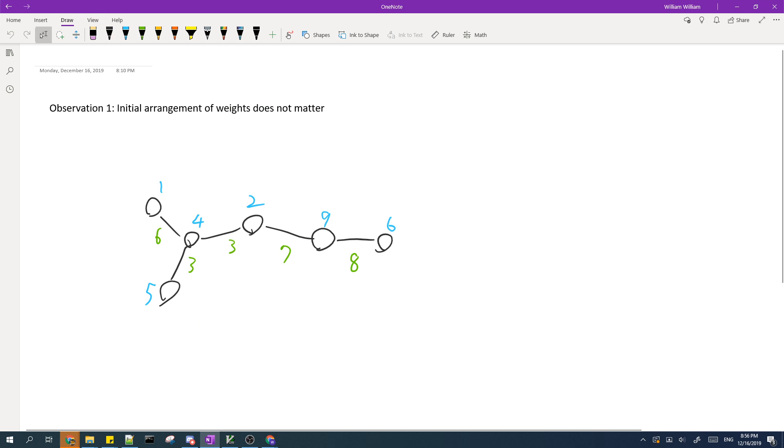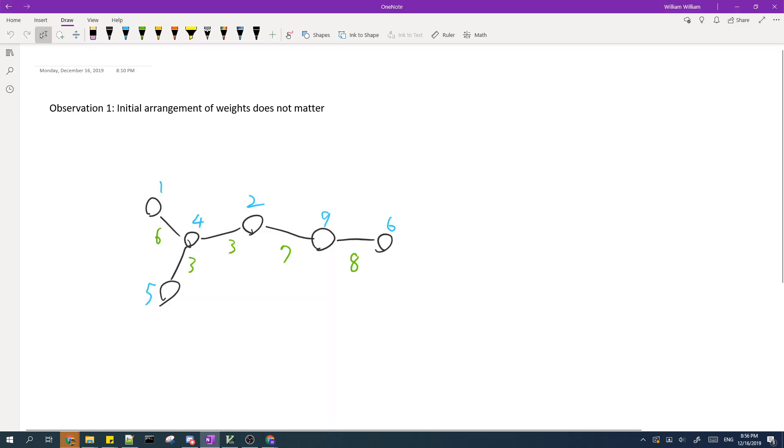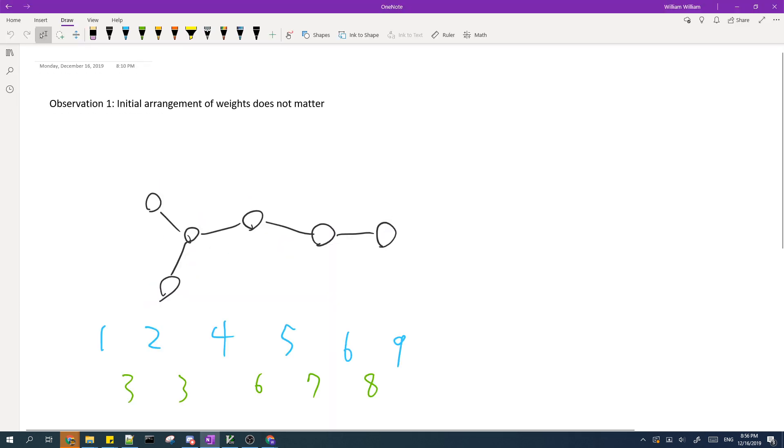The first observation you have to make is that the initial arrangement of the weights of both the nodes and edges does not matter because we're given the two operations here which allows us to swap any two node weights or any two edge weights. In fact, you can just take off the node weights and the edge weights off of the nodes and edges and sort them in an array.